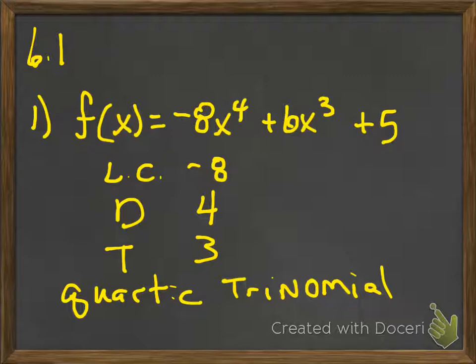So, negative 8x to the fourth plus 6x cubed plus 5. Your leading coefficient is the number that's in front once you put it in order. The degree is the exponent. Terms: 1, 2, 3. So this is a quartic trinomial. I also gave it the name just in case — you never know.